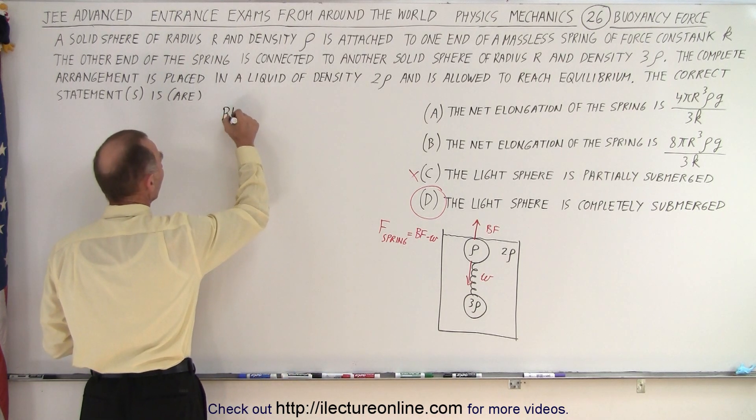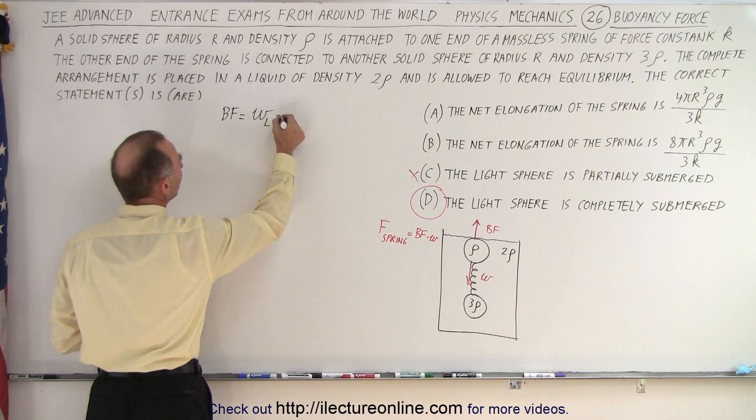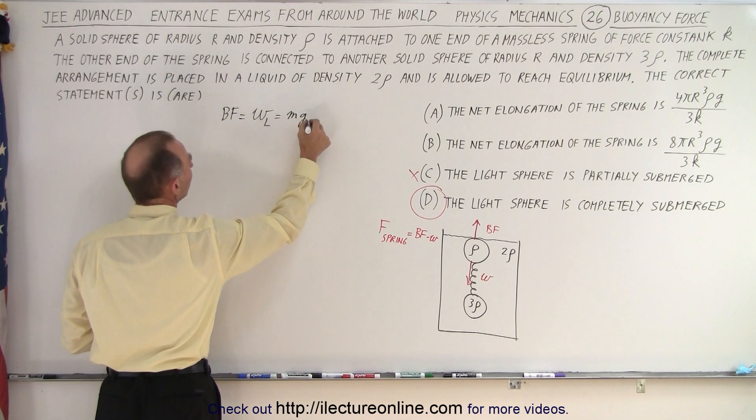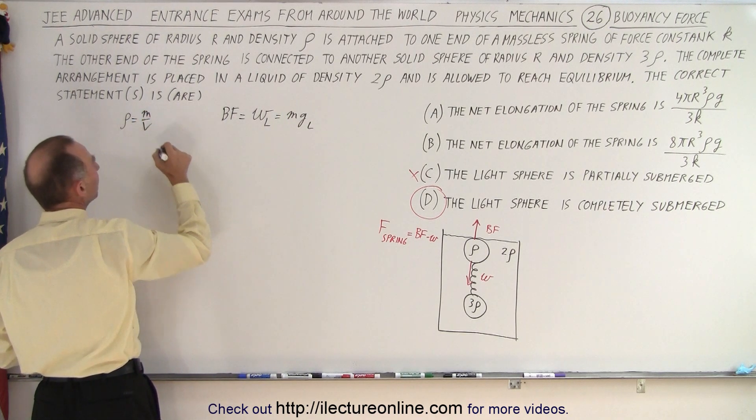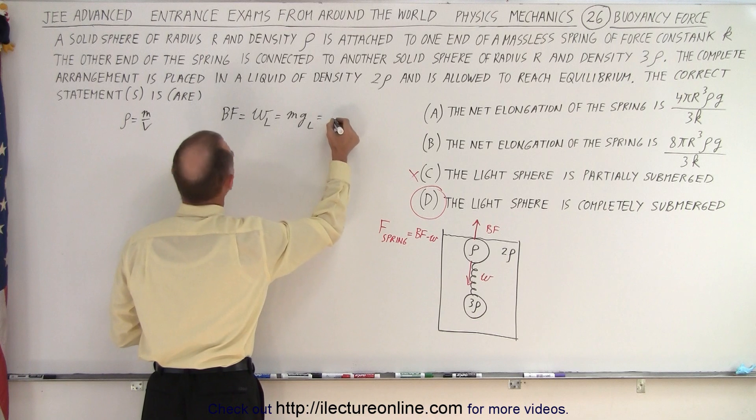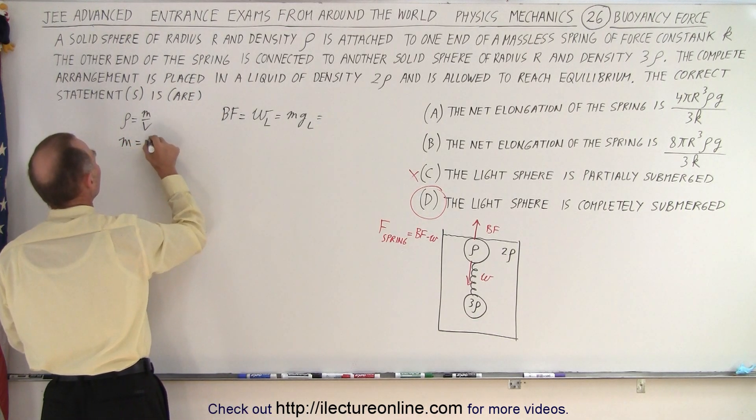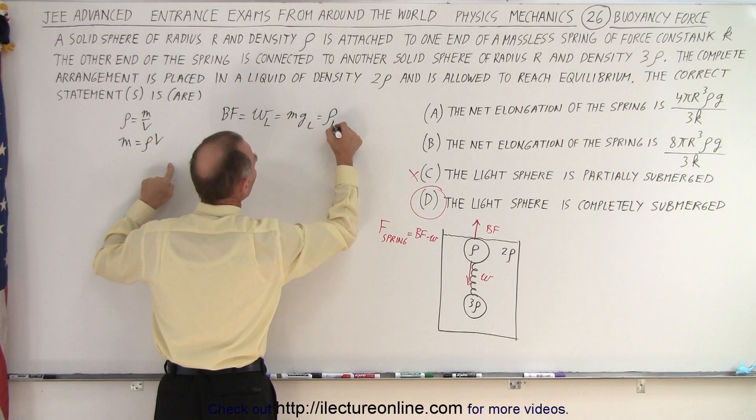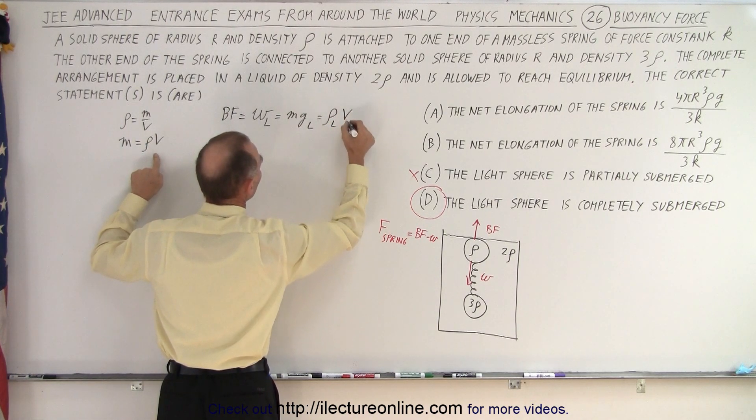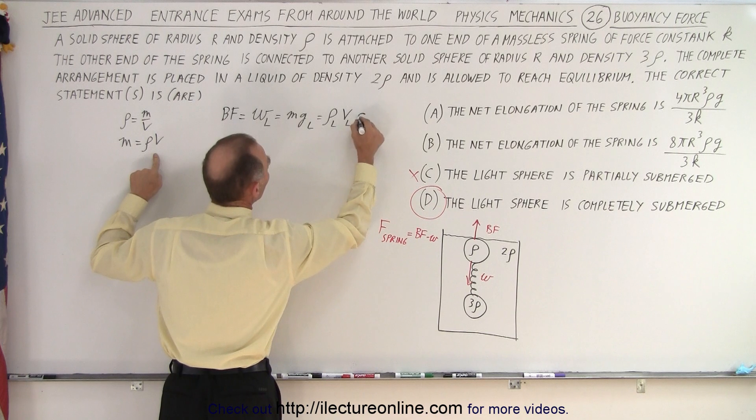Let's calculate the buoyancy force, which by definition is equal to the weight of the displaced liquid, which is mg of the liquid. And notice that the density is equal to the mass over volume. That's going to be equal to, well, then the mass can be written as the density times volume. So the mass is going to be the density of the liquid times the volume of the displaced liquid, which is the same as the volume of the sphere, times g.